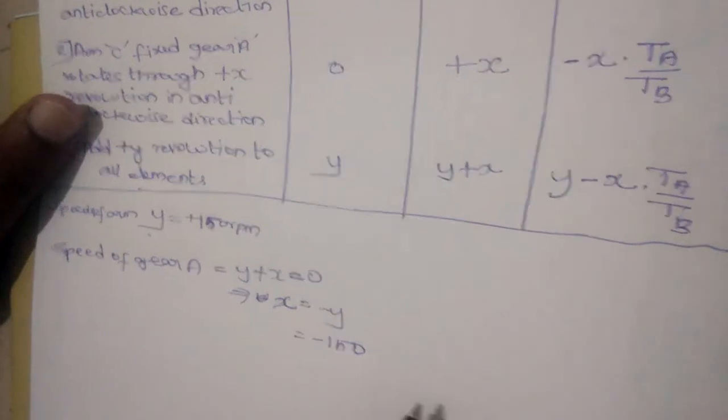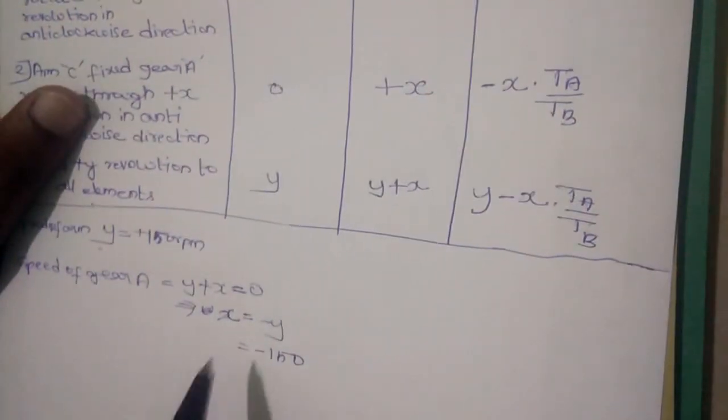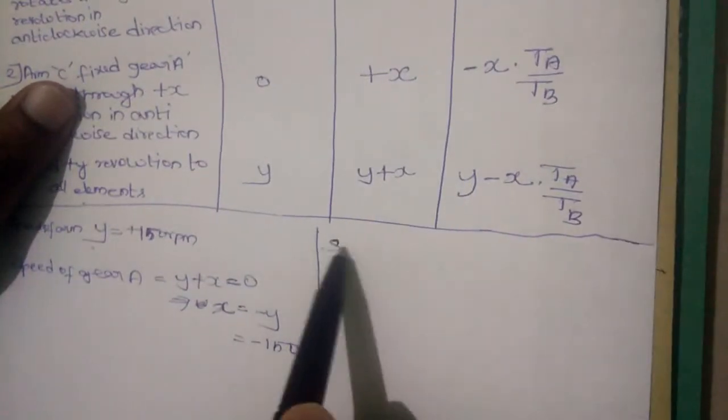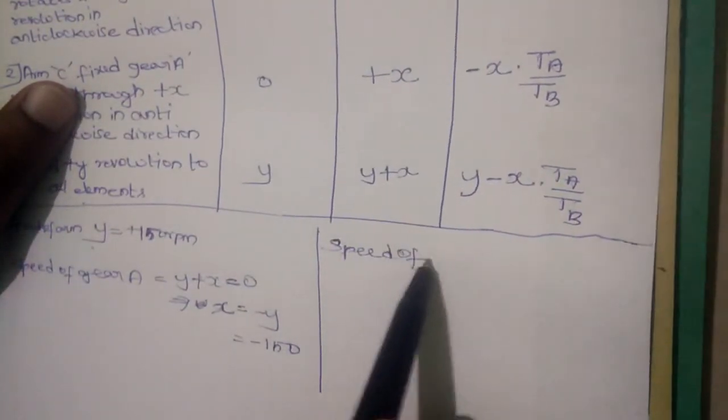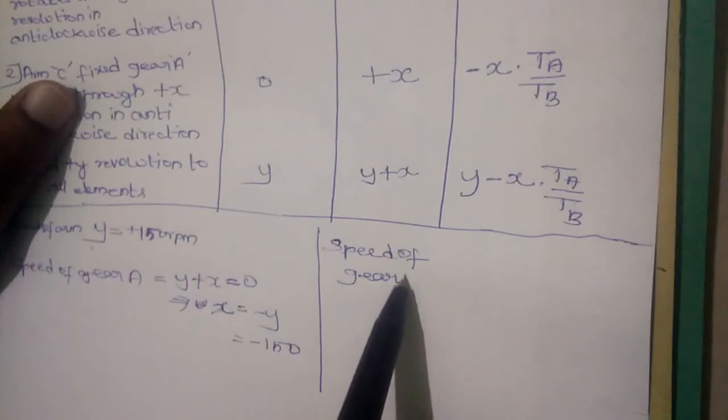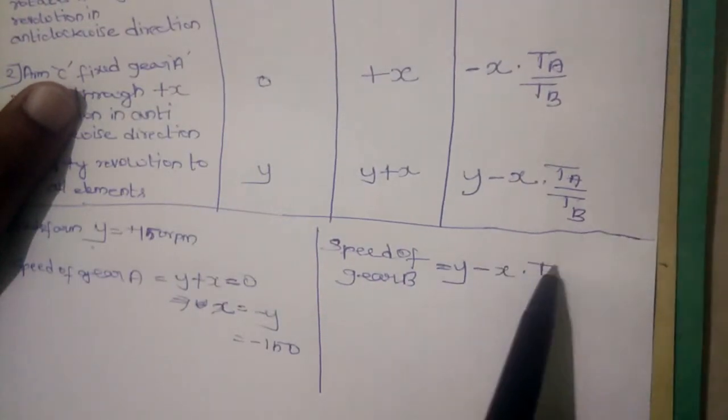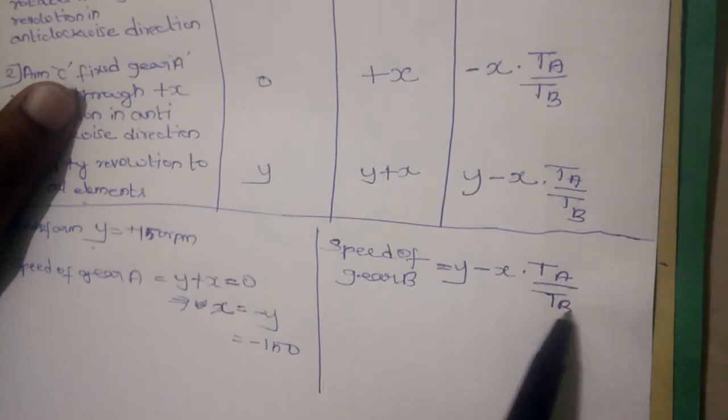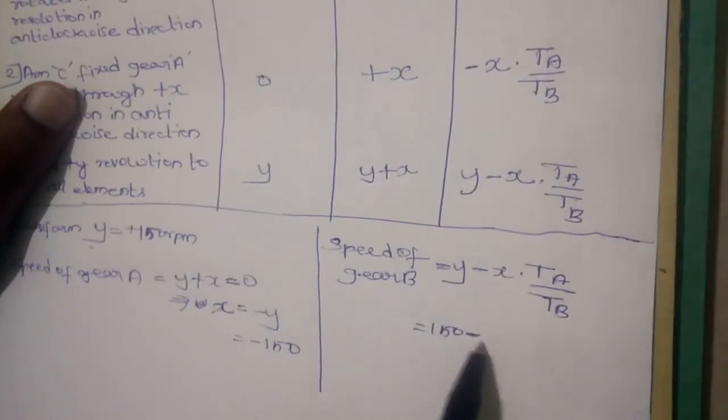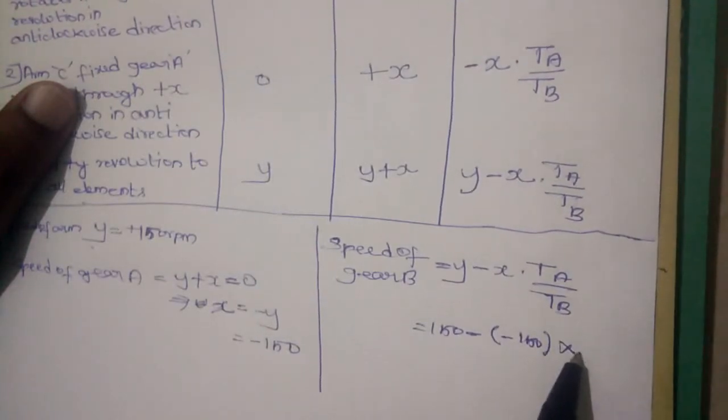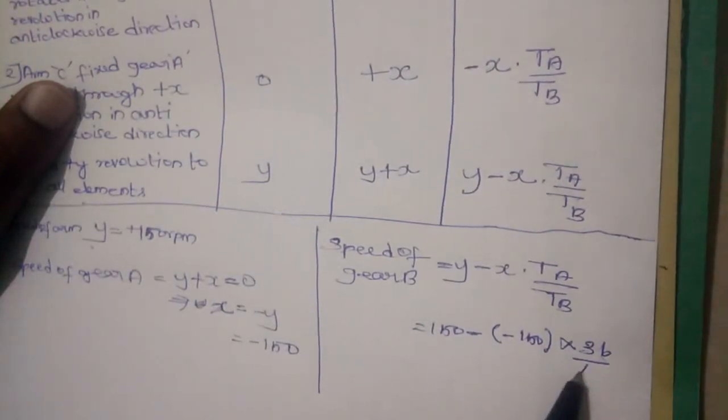Now substituting this in speed of gear B. Speed of gear B is equal to y minus of x into TA by TB. Here y is 150 minus x is minus 150. TA is 36, TB is 45.